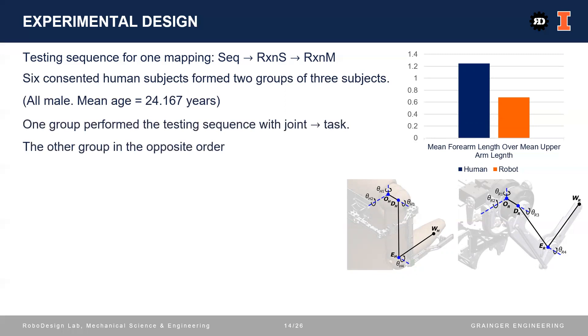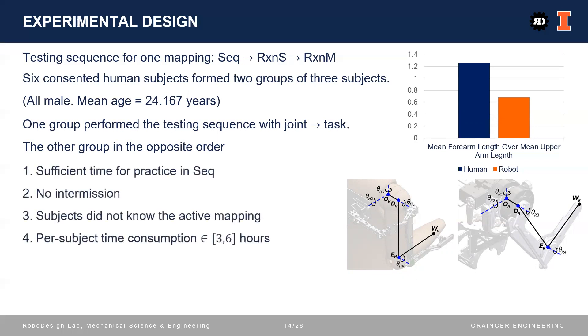One of the comparison groups started with joint space mapping, and then task space, while the other group had the opposite order of mappings. Additionally, every subject was provided with sufficient time to practice the teleoperation, but only in sequential striking test. There was no intermission within a testing sequence, and a subject did not know which mapping was active. Per-subject time consumption for this experiment was between three and six hours, so this was a quite strenuous and time-consuming experiment.